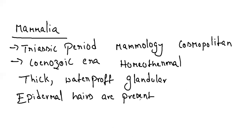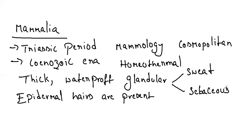There are two main types of skin glands: sweat glands and sebaceous glands. Sweat glands release sweat that helps in regulating temperature and is excretory in nature, excreting excess sodium, fat, and salts. Sebaceous glands release oily secretions keeping the skin and hairs waterproof.